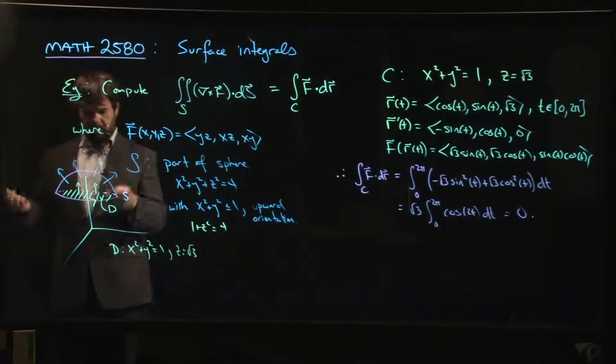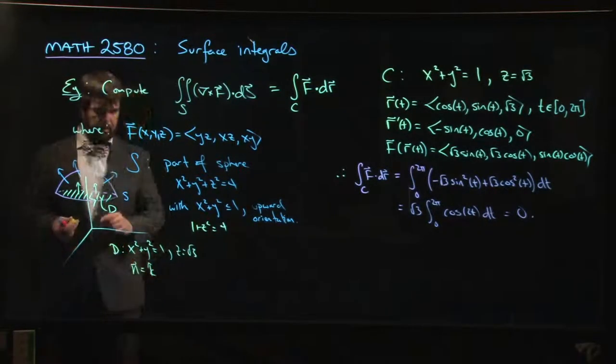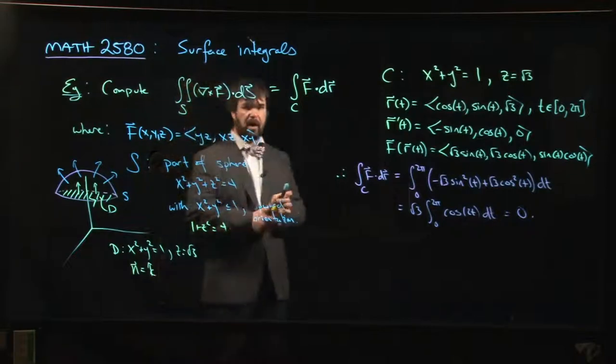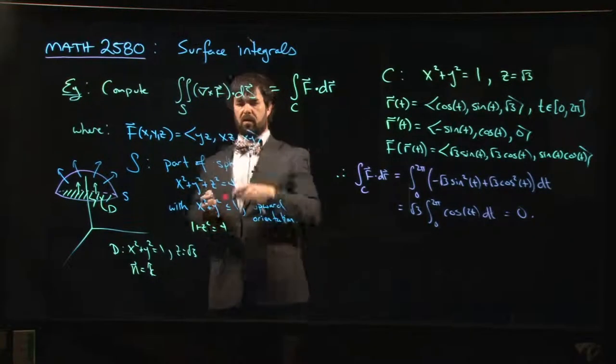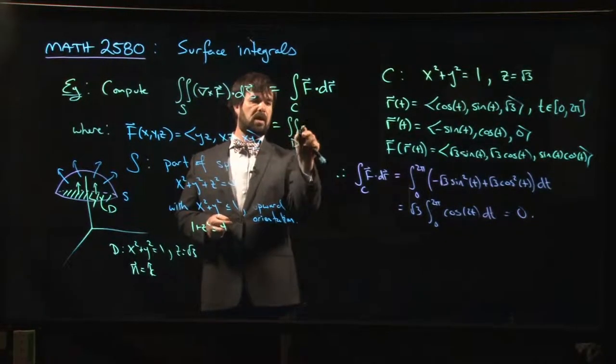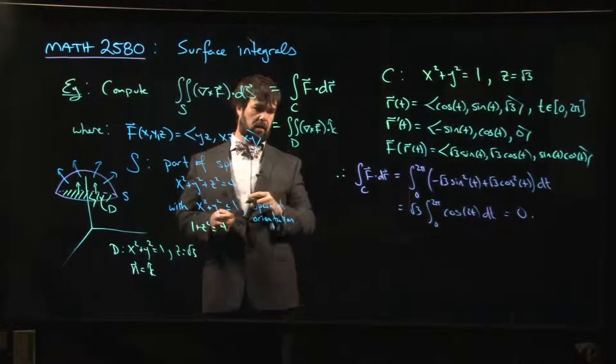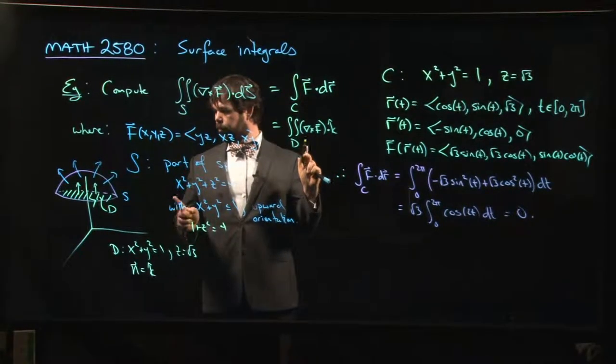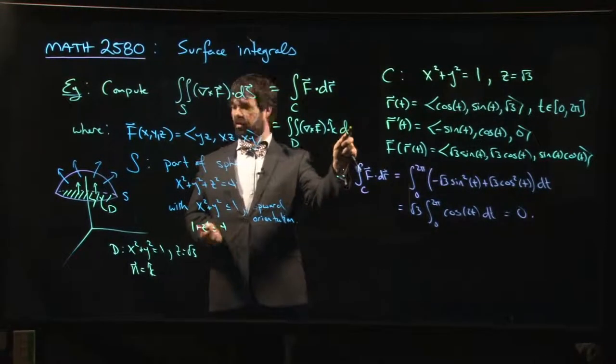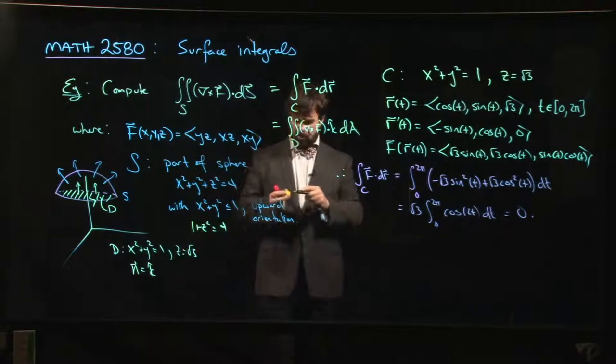And we know that the normal vector for this thing, the upward pointing unit normal, is just going to be k. So although this was not so bad, another option that you have is you could say that this integral here will also be equal to the integral over d of the curl of f dot with k. And that's the upward pointing unit normal, so we could integrate with respect to surface area, ds, except it's parallel to the xy plane, so it's really actually just dA.